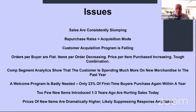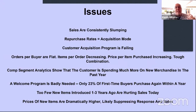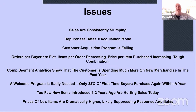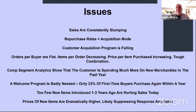When presenting this to the executive team: sales are consistently slumping and they already know that. Their repurchase rates put them clearly in acquisition mode. Their customer acquisition program is failing. You can have failing products and still have a strong customer acquisition program and be successful — I have a client that grows 5% to 10% per year while their merchandise gets 5% to 10% worse every year, because marketing always brings in more new customers. Orders per buyer are flat; items per order are decreasing; price per item purchased is increasing — that's a tough combination.